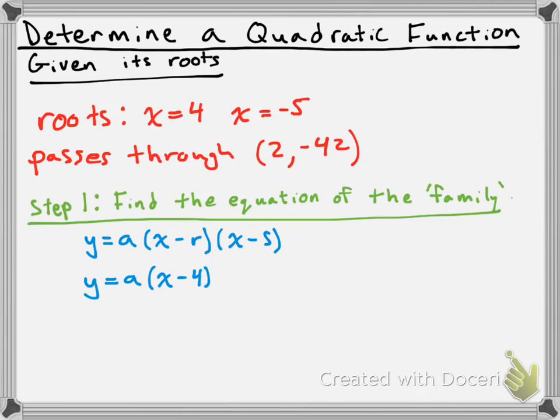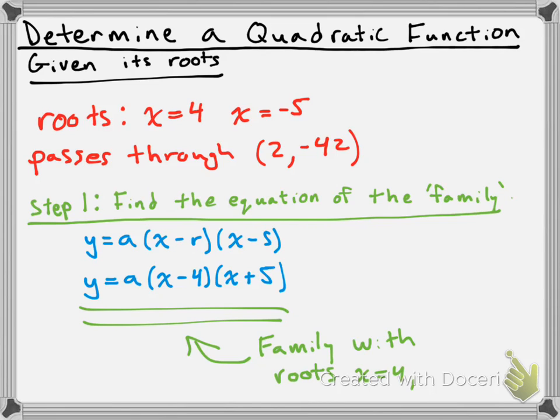So I'm going to place those roots into my factors. We get y equals a times — since our first root is x equals 4, that gives us x minus 4 as a factor. And since our second root is x equals negative 5, we get x plus 5. Because if I place negative 5 in for s, I get x minus negative 5, which is x plus 5. So what I have here is the family with roots x equals 4 and x equals negative 5. That's the equation of the family.